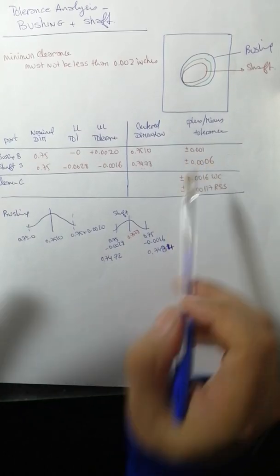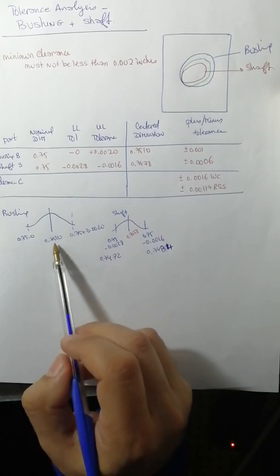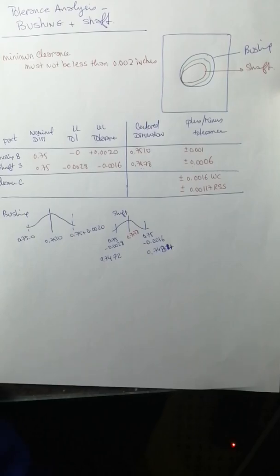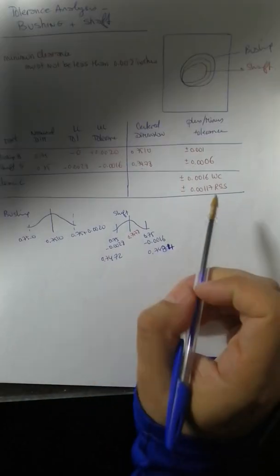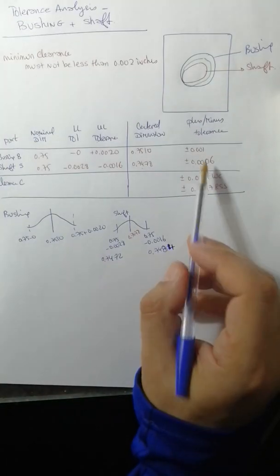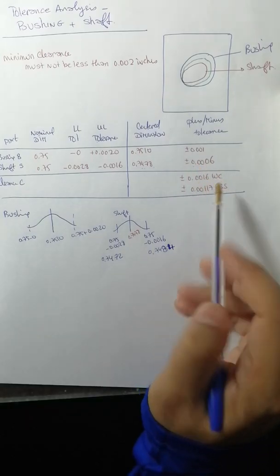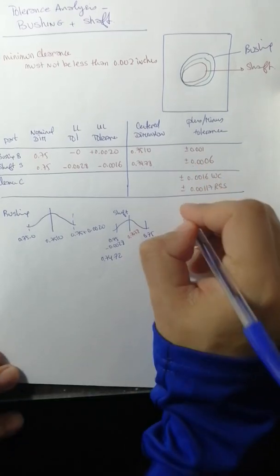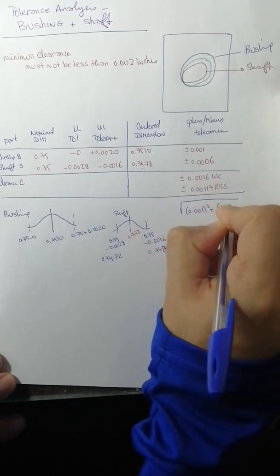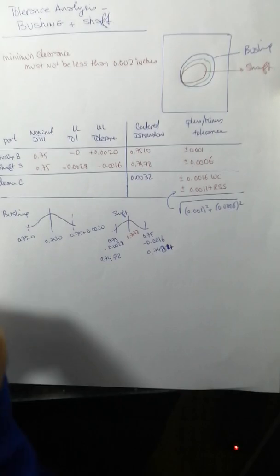From 0.7478 to 0.7484 there is 0.0006, and from 0.7472 to 0.7478 there is 0.0006. In order to find the worst case value, the tolerance is 0.001. For the root sum square, we take the square root of 0.001 squared plus 0.0006 squared and we got this value.